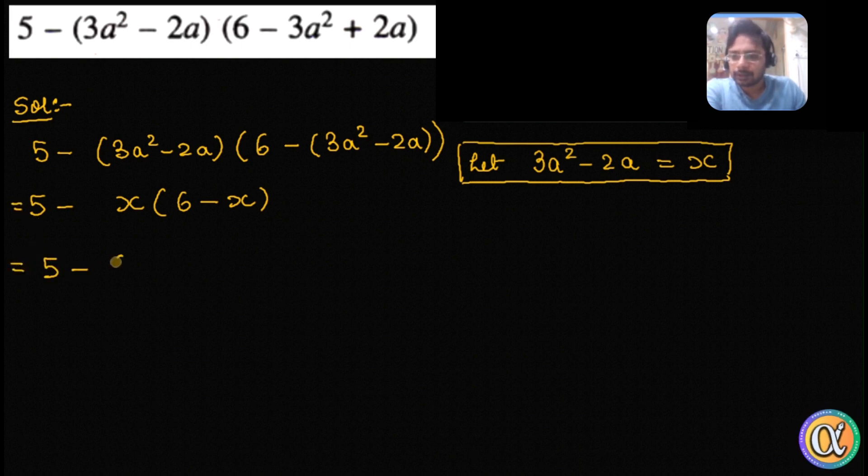Now let's expand this: 5 minus 6x plus x squared. Does it look like a quadratic polynomial? And we can expand this because x is in the middle. Product of the corner is 5.